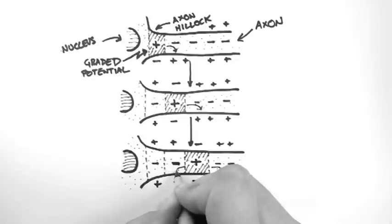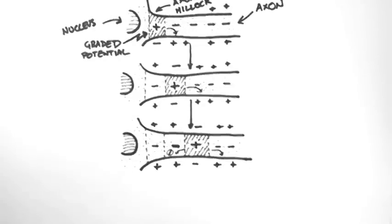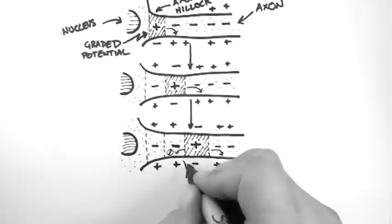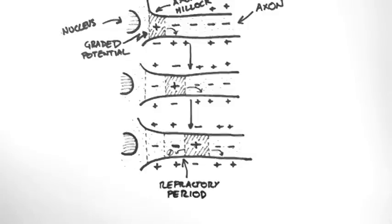So the last issue is to address why doesn't the local current flow backwards and trigger an action potential in the other direction. The answer is that it does flow backwards but it doesn't trigger an action potential. The reason for this is in the molecular biology. The voltage gated channels that are in the previous segments are in what we call a refractory period. This means that they can't be activated again.